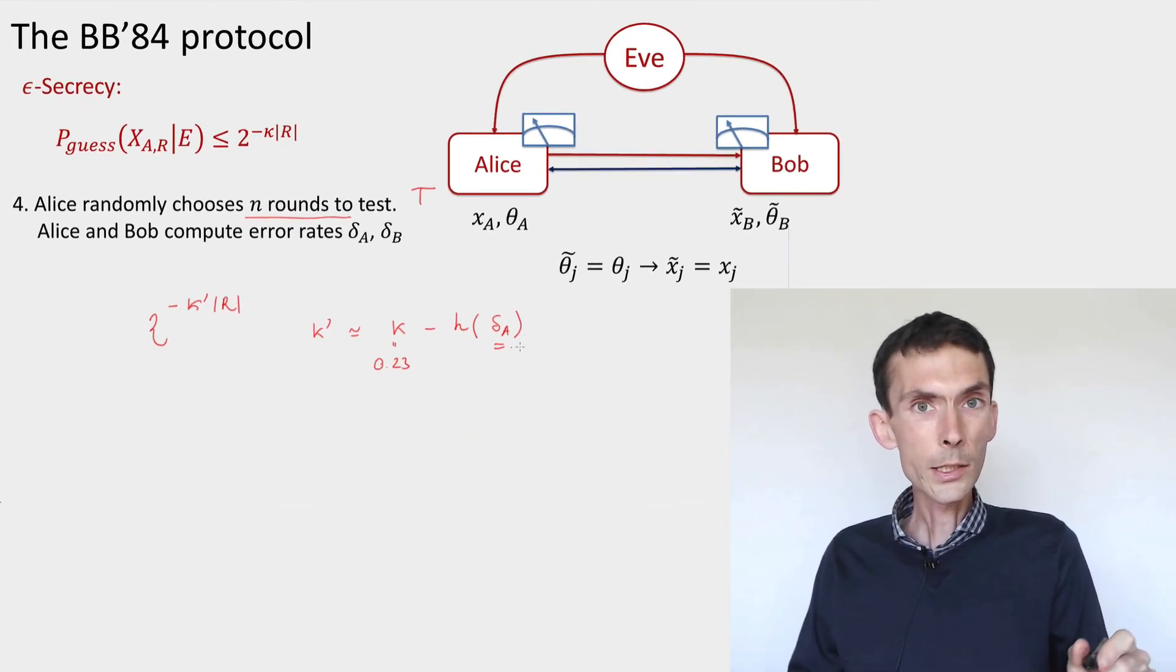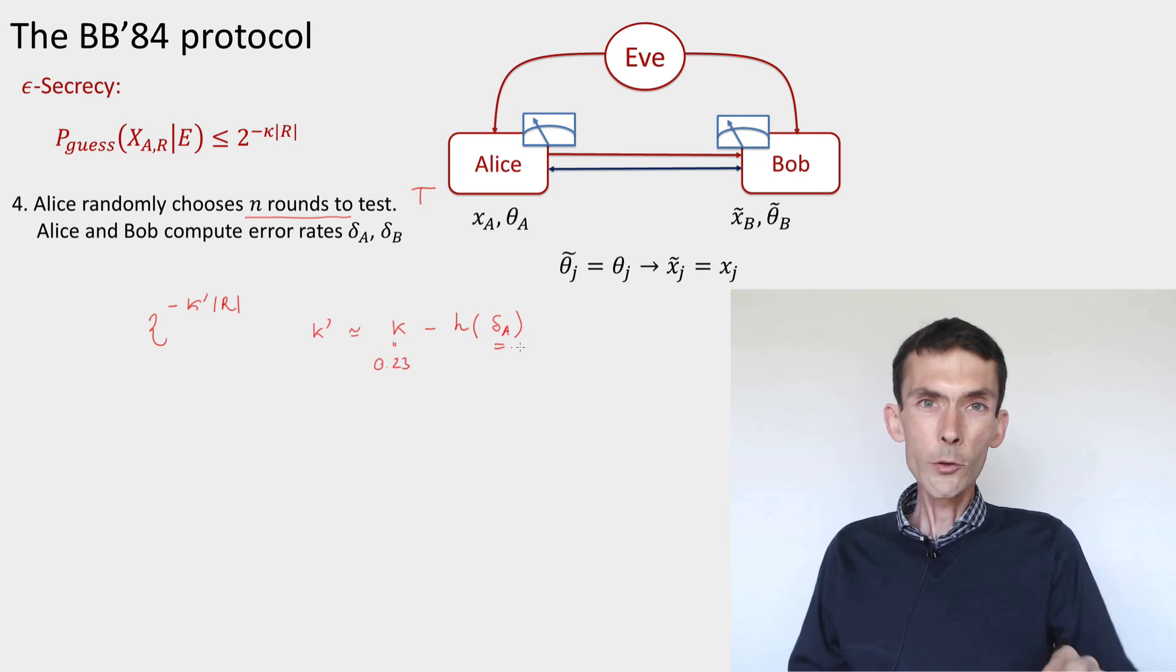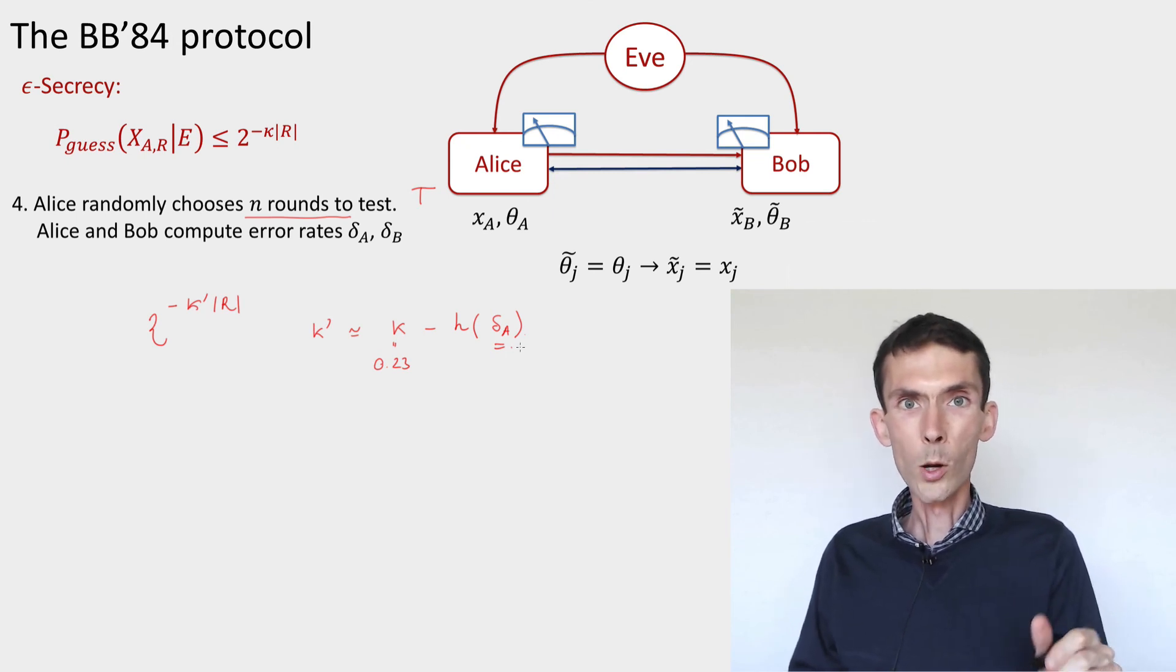That wraps up the analysis of the BB84 protocol, at least making some assumptions. Next week and week after, we're going to see a stronger proof of security of the protocol called the device independent proof of security that's going to make even less assumptions about what Alice and Bob know in this protocol. It's going to give more power to the eavesdropper.